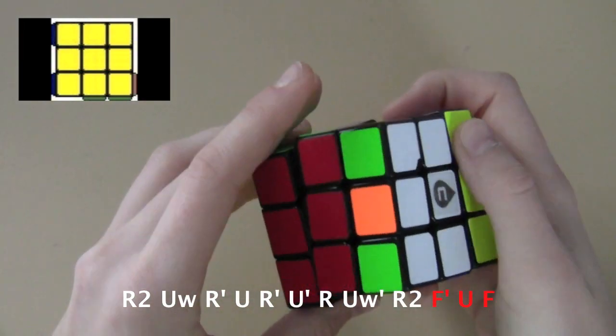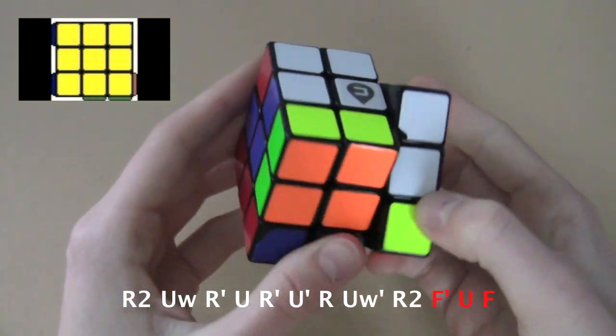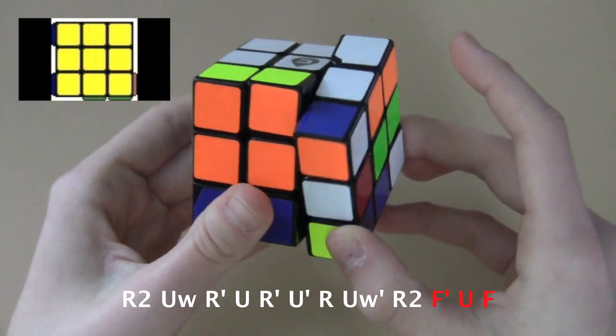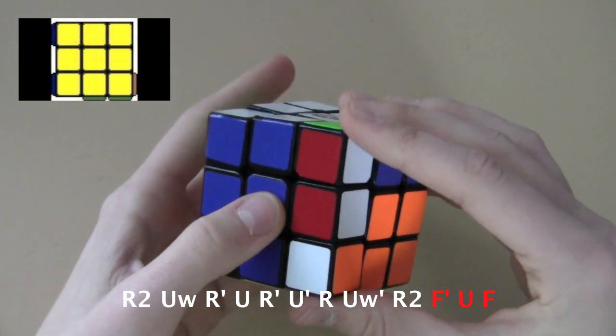For the rest of the algorithms, the headlights will be on the left side. And for this GD perm you will have the bar be in the front face, and the execution from there is pretty simple.